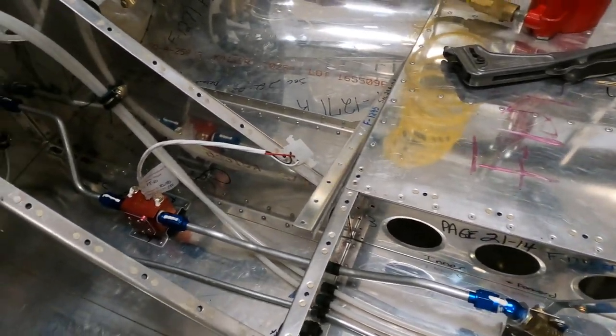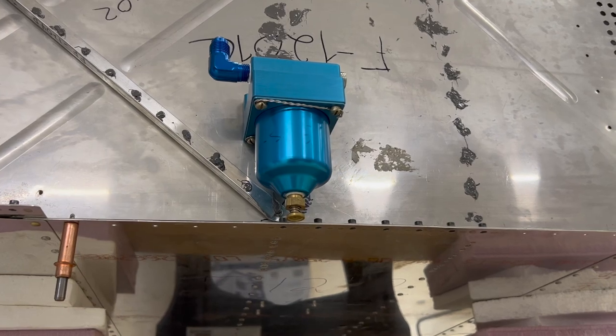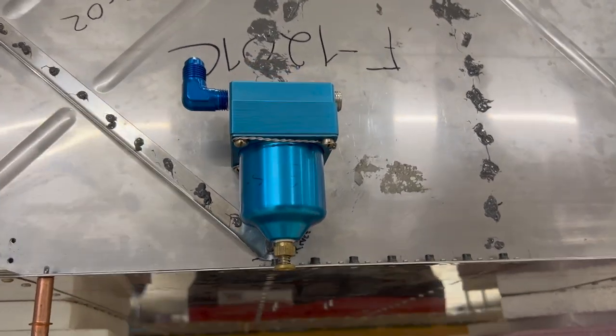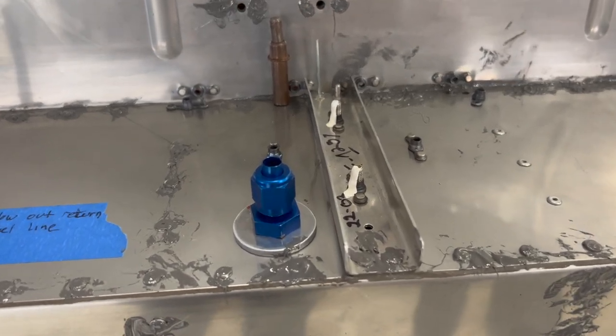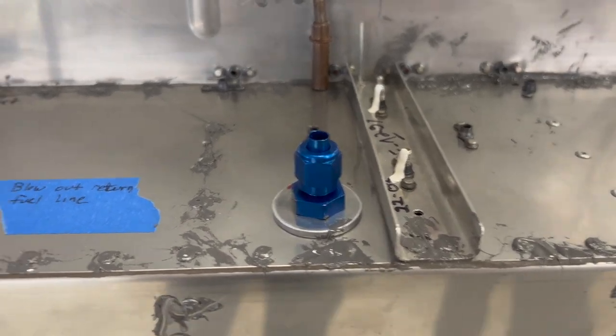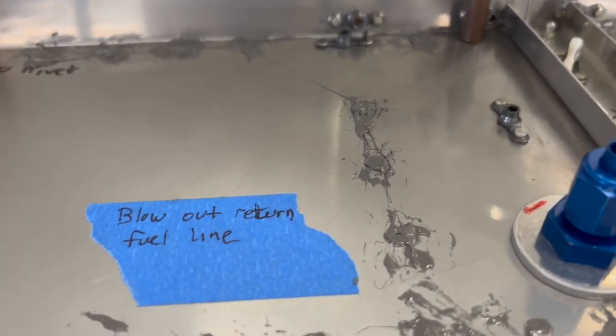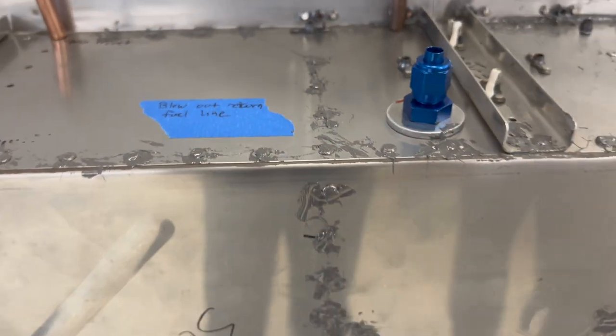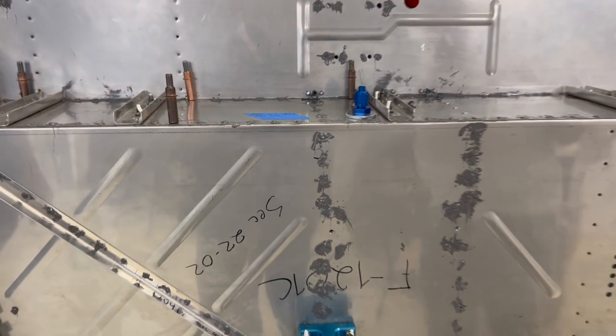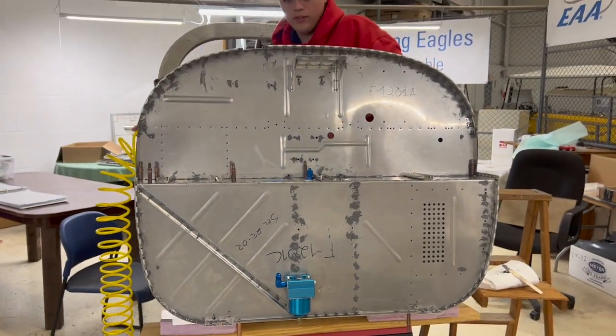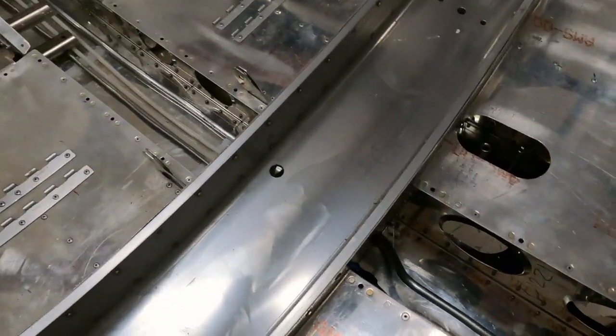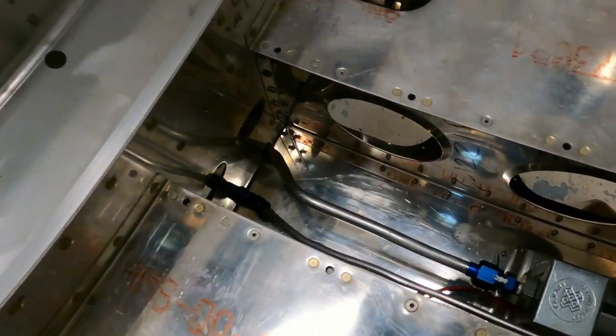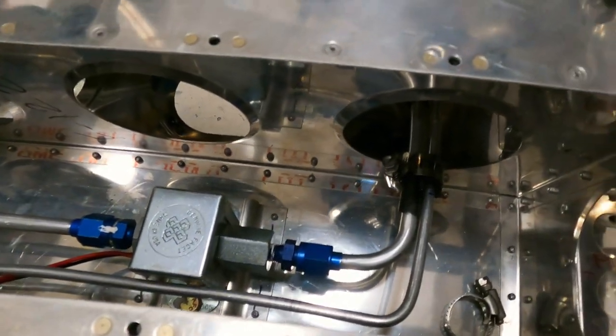Then it works its way forward to a shutoff valve, and after the shutoff valve there's a flow scan flow sensor, and then from there it goes into a gas collator. There's a return line that you have to also install, and it goes from the firewall, the upper part of the firewall, back down, follows the same path as the fuel flow from the fuel pump back into the gas tank.